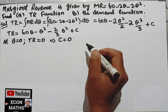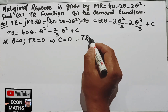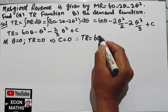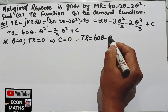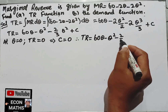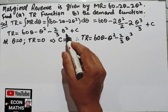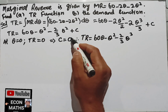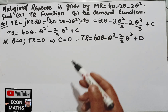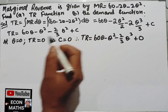Therefore, total revenue is equal to 60Q minus Q squared minus 2/3 Q cubed, with C equal to 0. This is the total revenue function. Now part B was to find the demand function.